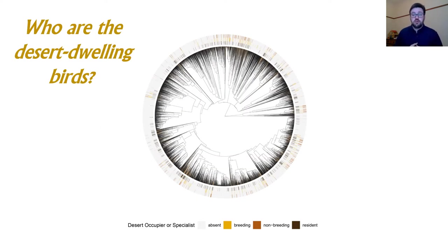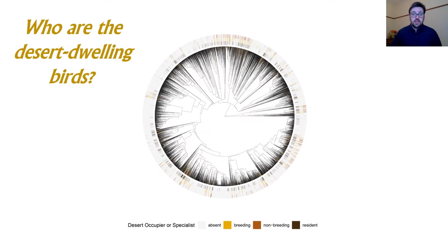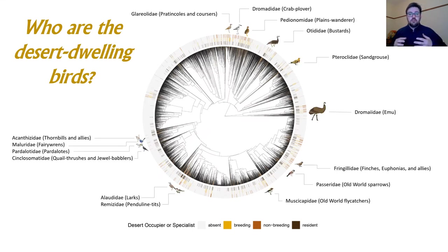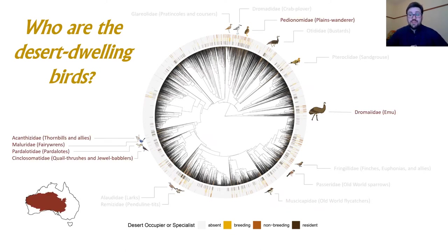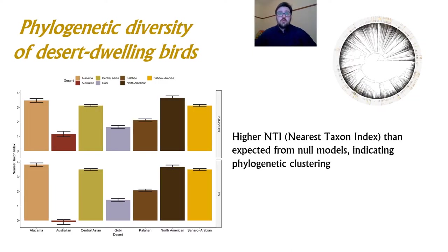If we plot all our desert dwelling birds on the phylogeny, we find that actually all areas of the bird tree of life have desert dwelling species, which you can see based on the yellow colored branches or based on specific types of their ranges and the encircling rings. We found that several families have a higher than expected proportion of desert dwelling birds, and most of these families are actually Old World families — there are no New World endemic families in this list. However, six different families out of the total 15 are endemic to Australia, which is pretty interesting in and of itself, and we'll get back to why Australia is interesting in a moment.